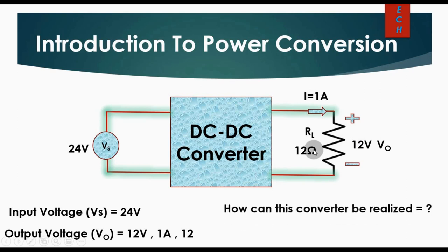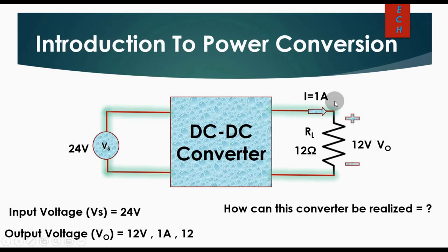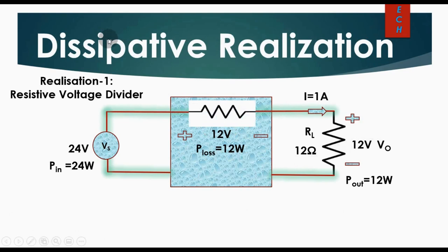Now the question is: how can this converter be realized? There are several methods to realize this converter — to convert 24 volt to 12 volt. We will take two or three techniques and I will show you how 24 volt can be converted into 12 volt at 1 ampere. Our first technique is dissipative realization.